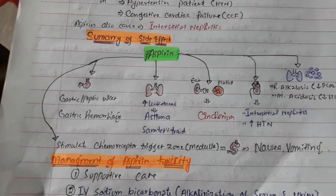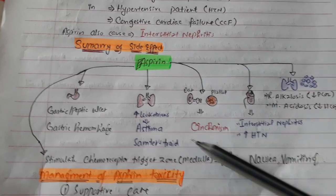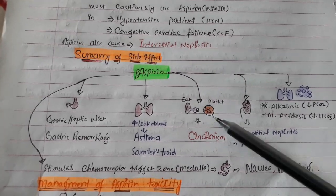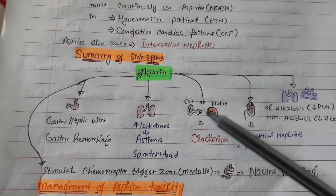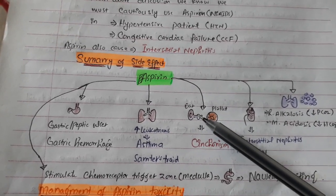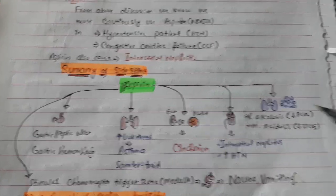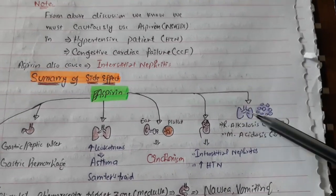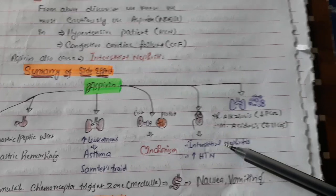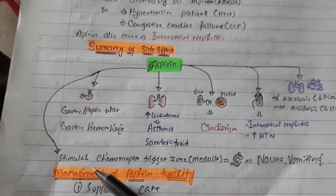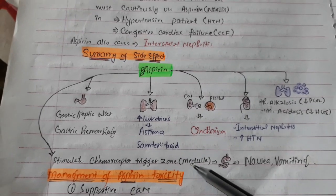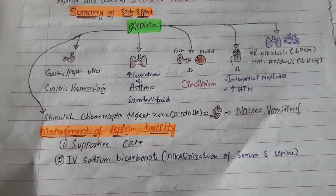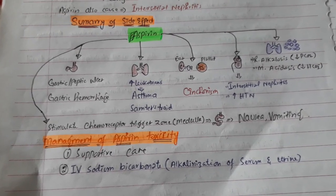Summary of aspirin side effects: gastric/peptic ulcer and gastric hemorrhage; increased leukotriene production leading to asthma; antibody production against platelets causing thrombocytopenia; antibody attack on cranial nerve eight causing tinnitus and decreased hearing (synchronism); interstitial nephritis; exacerbation of hypertension; respiratory alkalosis followed by metabolic acidosis; stimulation of the chemoreceptor trigger zone causing nausea and vomiting. Management of toxicity includes supportive care and IV sodium bicarbonate.